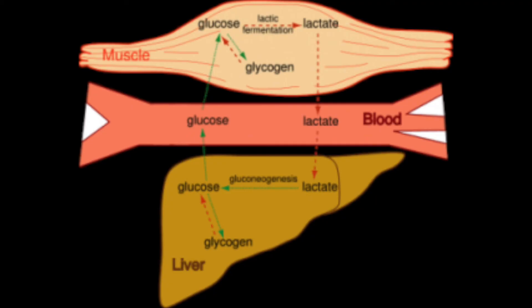If the glucose made from the lactic acid is not required, it can be converted into glycogen and stored in the liver until a later date where it is required.